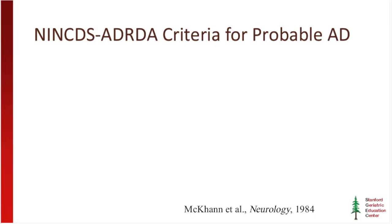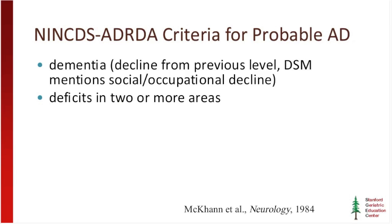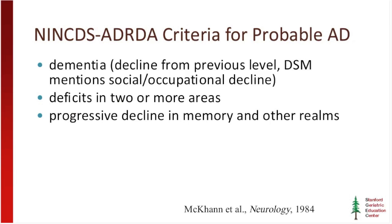Using these criteria, the patient has to have dementia, meaning there's been a change in their cognition severe enough that they can no longer handle day-to-day functions. For probable Alzheimer's disease, we need to see deficits in two or more cognitive domains — usually memory is the first, but it doesn't need to be. So these could be memory and language, or memory and visual-spatial skills. We do need to see progressive decline in memory as well as other realms over time.